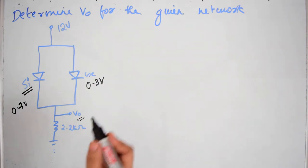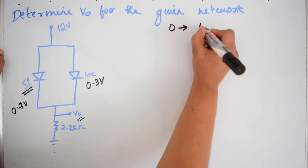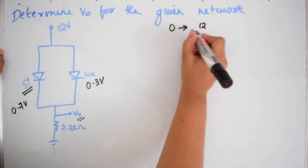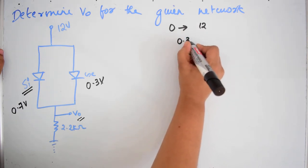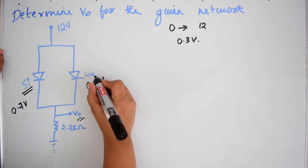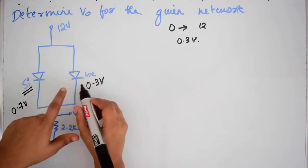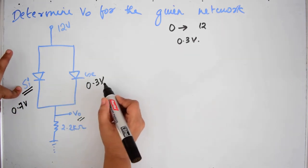When the voltage rises from 0 volt to 12 volt, in between, when the voltage reaches about 0.3 volt, this germanium diode will turn on. This will turn on before the silicon.